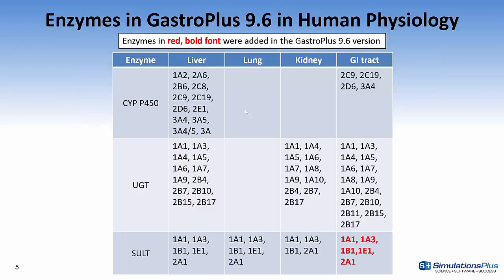The next few slides specifically discuss the enzymes currently in GastroPlus 9.6. On these slides, I've highlighted in red the ones that were newly added in 9.6. This is for human physiology, where we have the most number of enzymes defined. We have the P450s — a full complement in the liver and along the GI tract. UGT expression levels are defined in liver, kidney, and the GI tract. Sulfotransferase has been defined for all the different tissues — liver, lung, kidney, and GI tract — and these were newly added in GastroPlus 9.6.